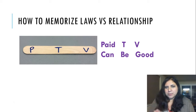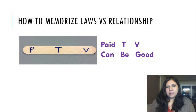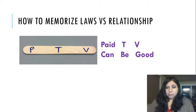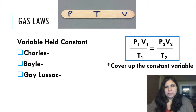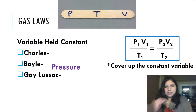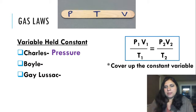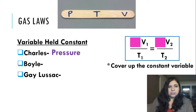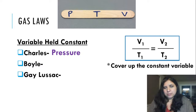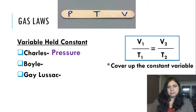First one: Charles's Law. In the mnemonic, Charles's Law goes with P, meaning pressure is held constant. We take the combined gas law equation, cover up pressure, and that gives us the Charles's Law equation. If we graph the relationship between temperature and volume, it gives a straight line, meaning it is a direct relationship. Holding pressure constant: if volume goes up, temperature has to go up because the volume went up. If temperature comes down, volume goes down with it — a direct relationship.